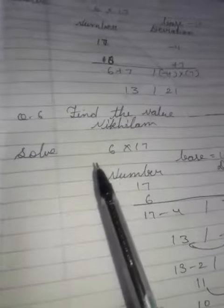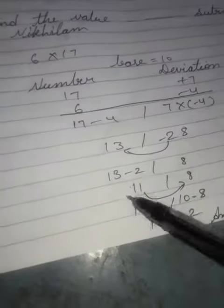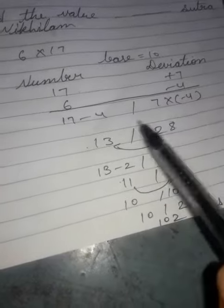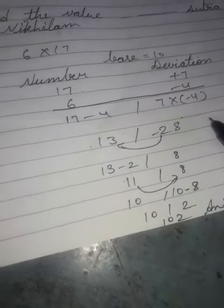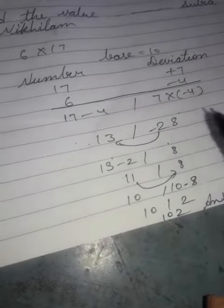Solving question number 6: 6 multiply 17, base 10. Number deviations: 17 plus 7, 6 minus 4. Then 17 minus 4 gives 13. 7 multiply 4 gives 28. 28 minus 28.